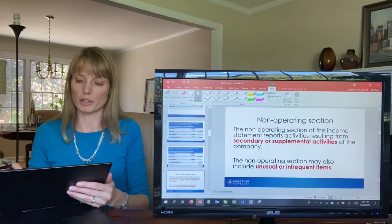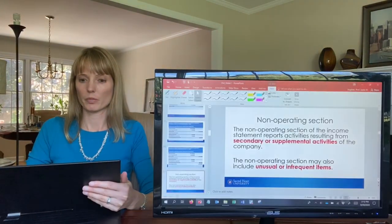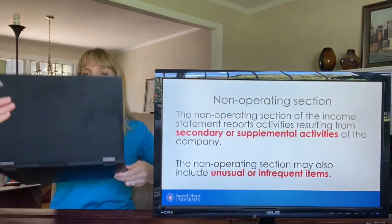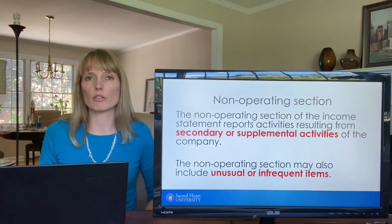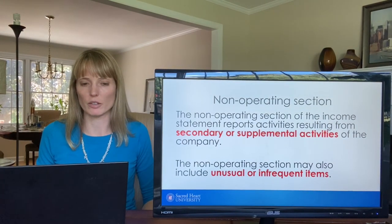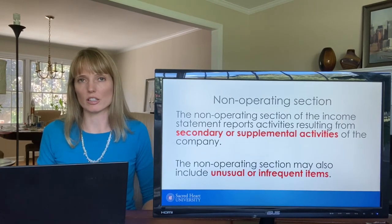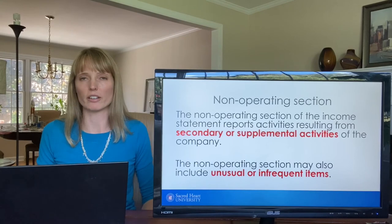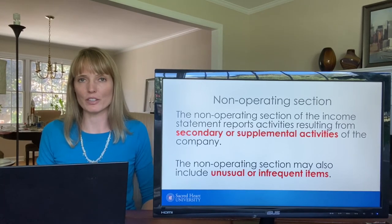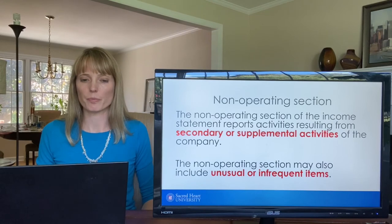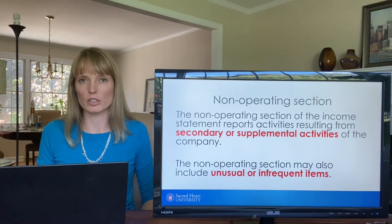Now let's move along to the non-operating section. The non-operating section of the income statement reports activities that result from secondary or supplemental activities. For example, if Target has excess cash and invests it in the stock market, earning dividends from equity investments, that is not related to the company's primary business activities and would be considered non-operating. The non-operating section can also refer to unusual or infrequent items, which we'll discuss in a moment.